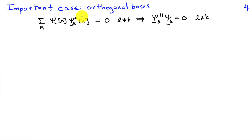Now there's a very important case, and that's when the bases are orthogonal. And what we mean by orthogonality is that the sum over all n of psi k times psi l, complex conjugate, is 0 when l is not equal to k. And this sum is just the inner product of the vectors, psi l, complex conjugate transpose, times psi k. And again, orthogonality implies that that's 0 when l is not equal to k.